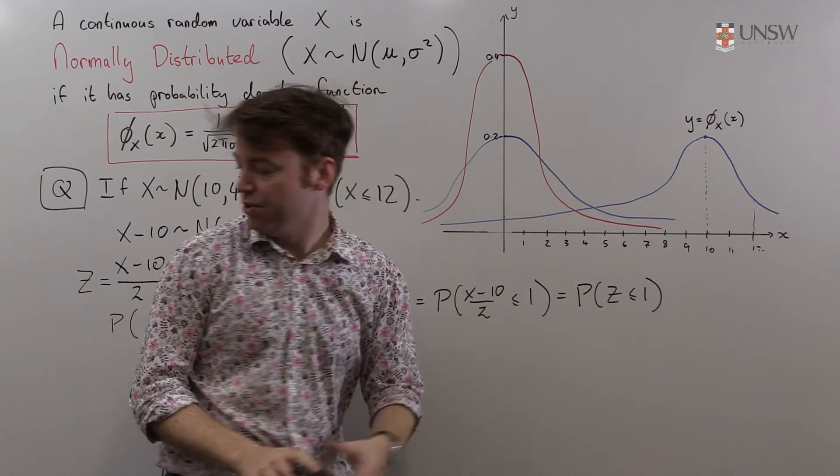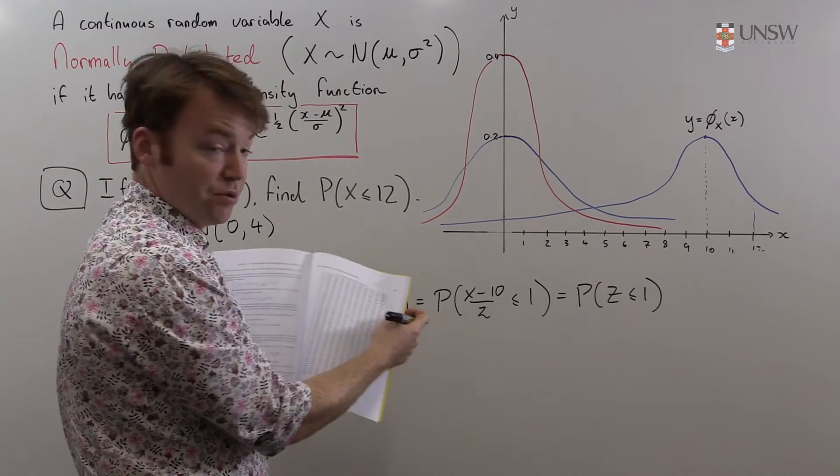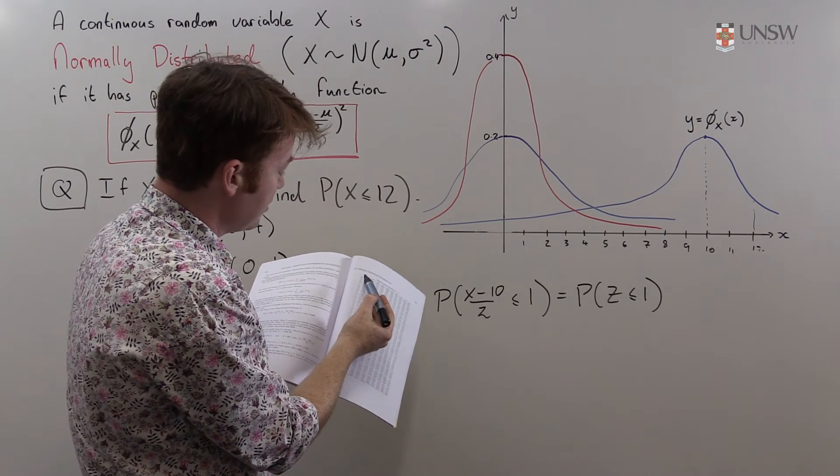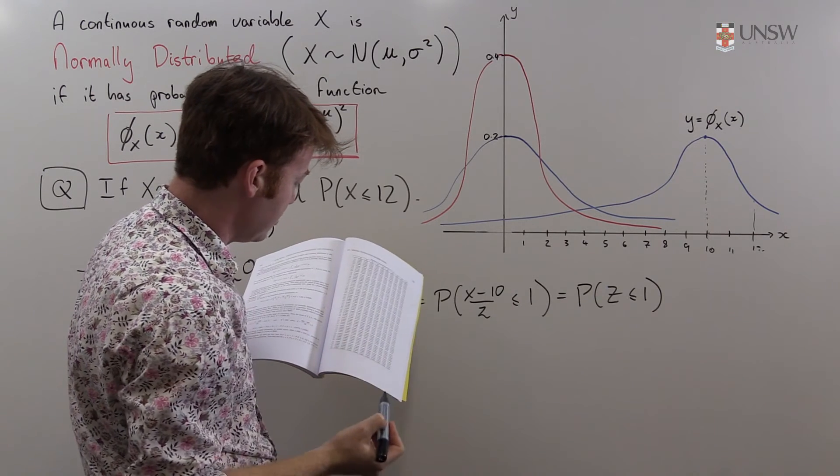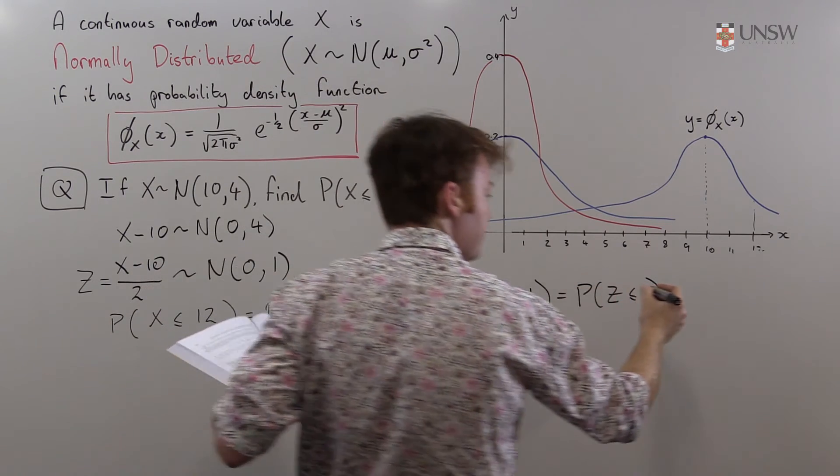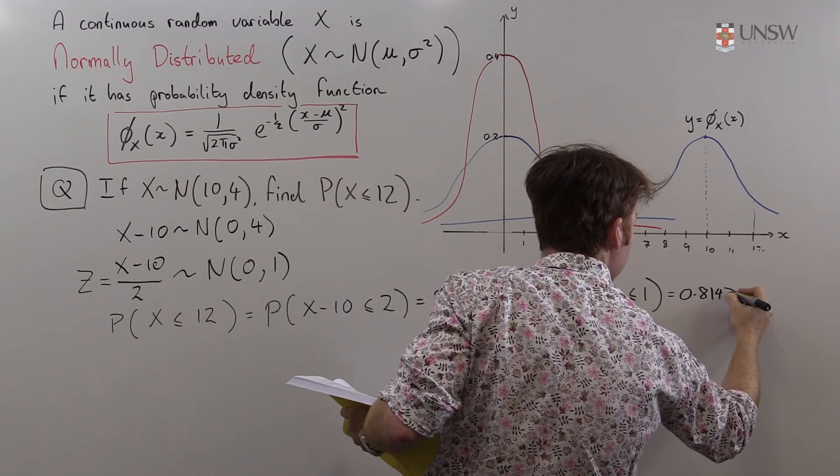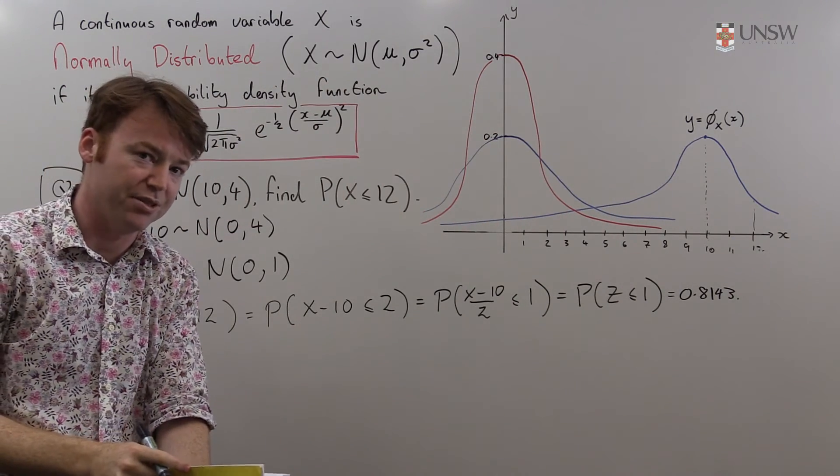When it's like this you can take your table from page 203 of the notes and look up the value of Z has to be less than or equal to 1. So that's 0.8413. Thank you very much, lookup table on page 203.